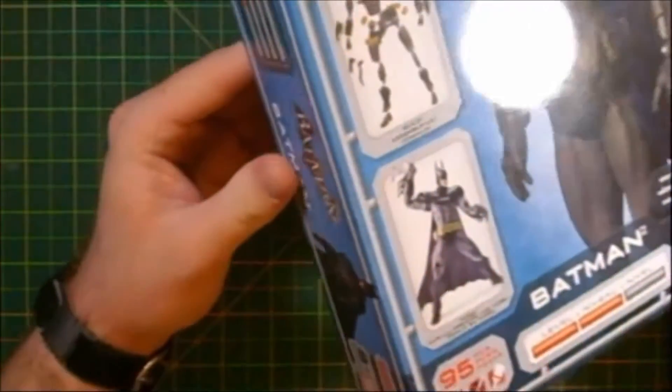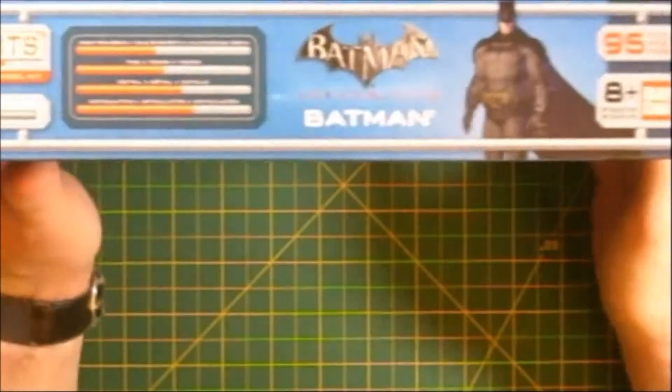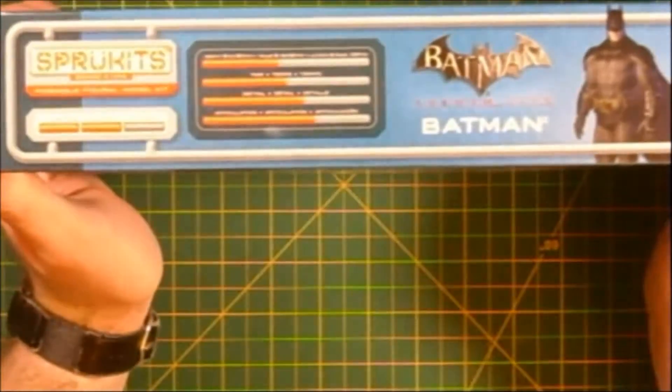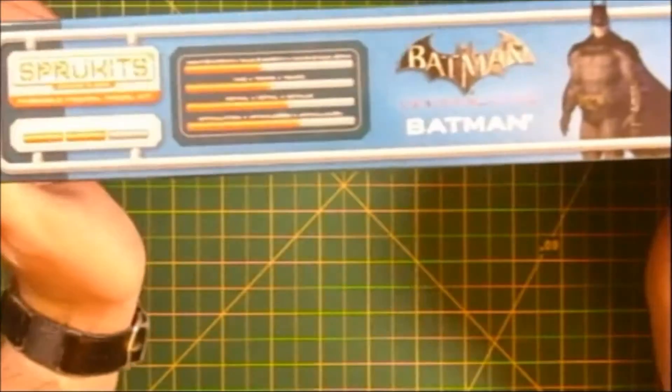On the front corner here, we've also got the piece count down here, and some little symbols indicating you don't need cutters, but cutters do make it a little bit easier to get the pieces off of the sprues. You won't need paint to complete it, and you won't need glue to complete it.